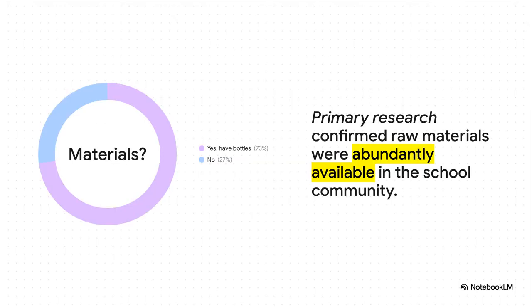And check this out. A key piece of their own research: the student just asked their classmates a simple question and found that almost three quarters of them had plastic bottles at home that could be used. This was a huge green light. It proved that the main raw material for the project wasn't just available, it was everywhere, right there in their own community.